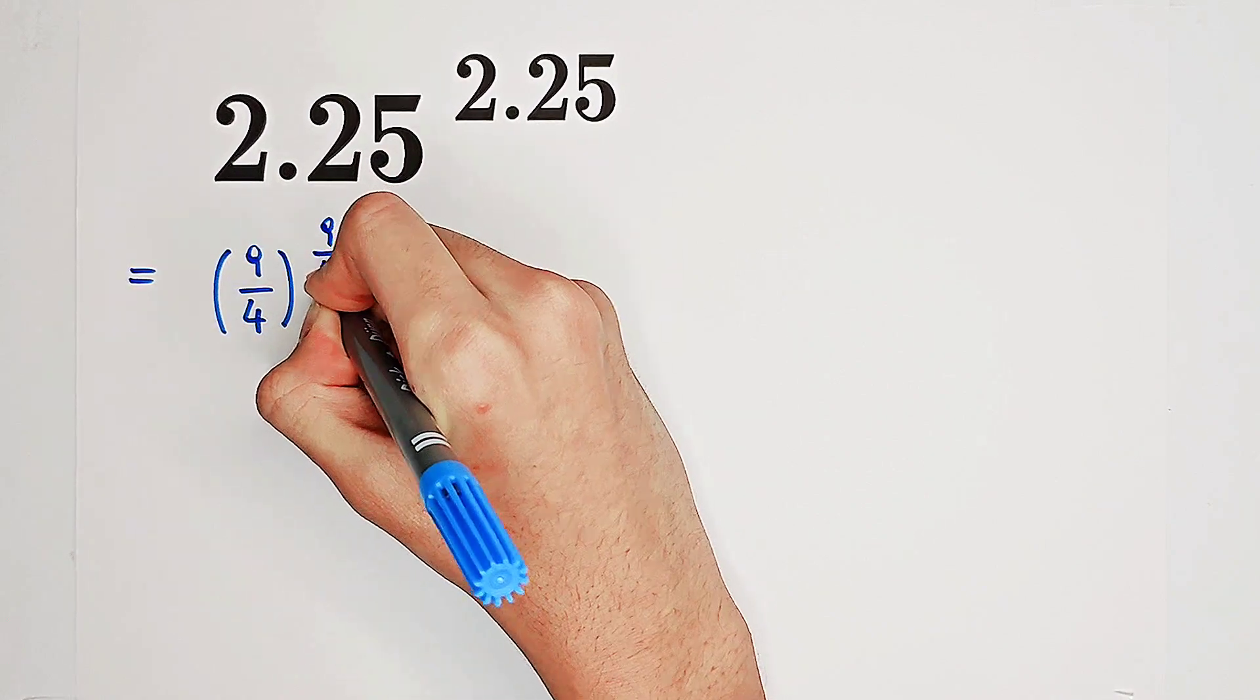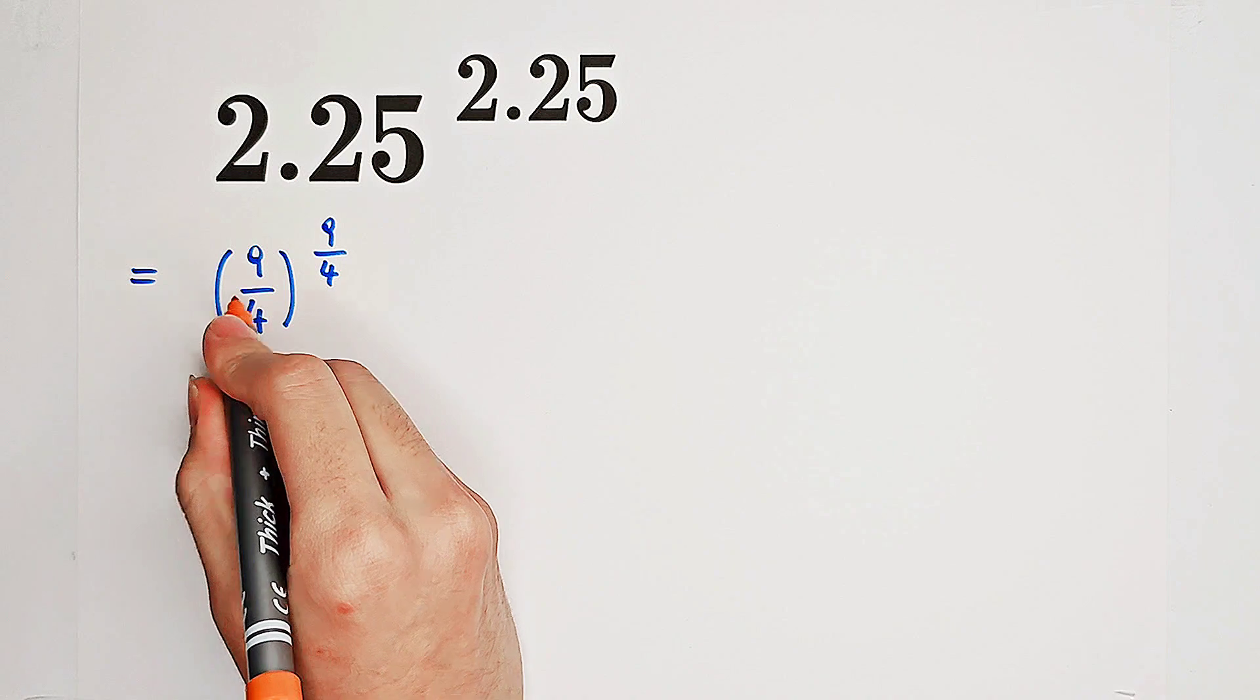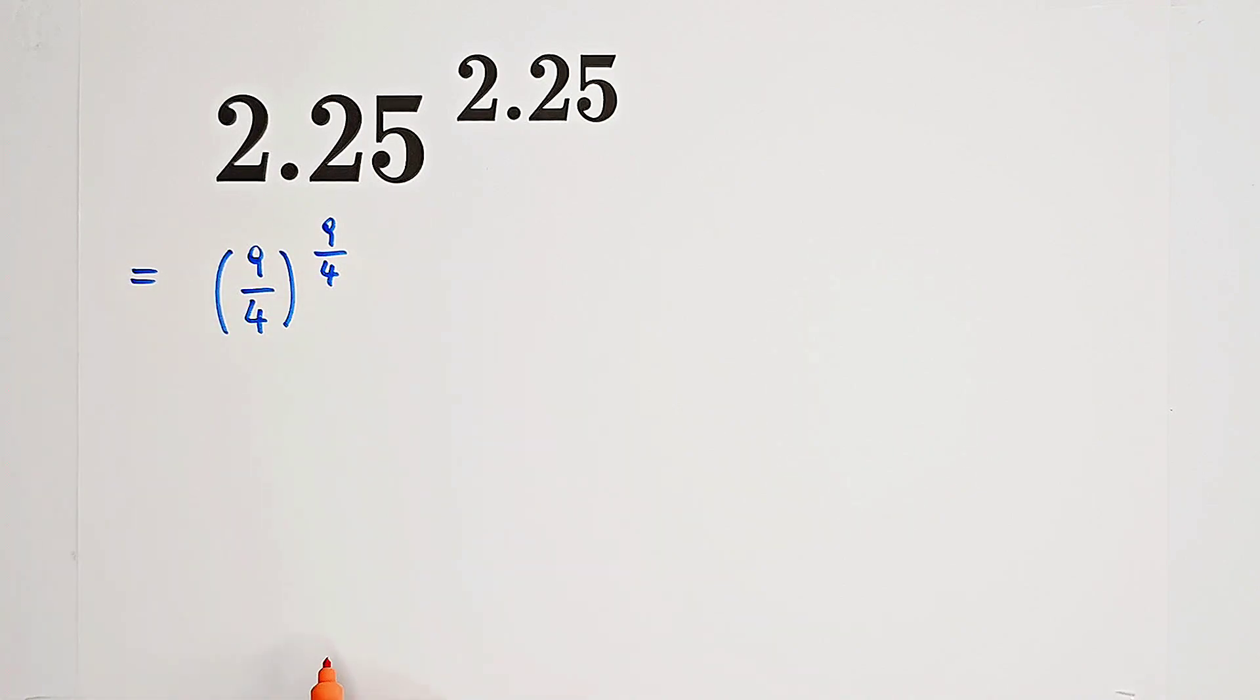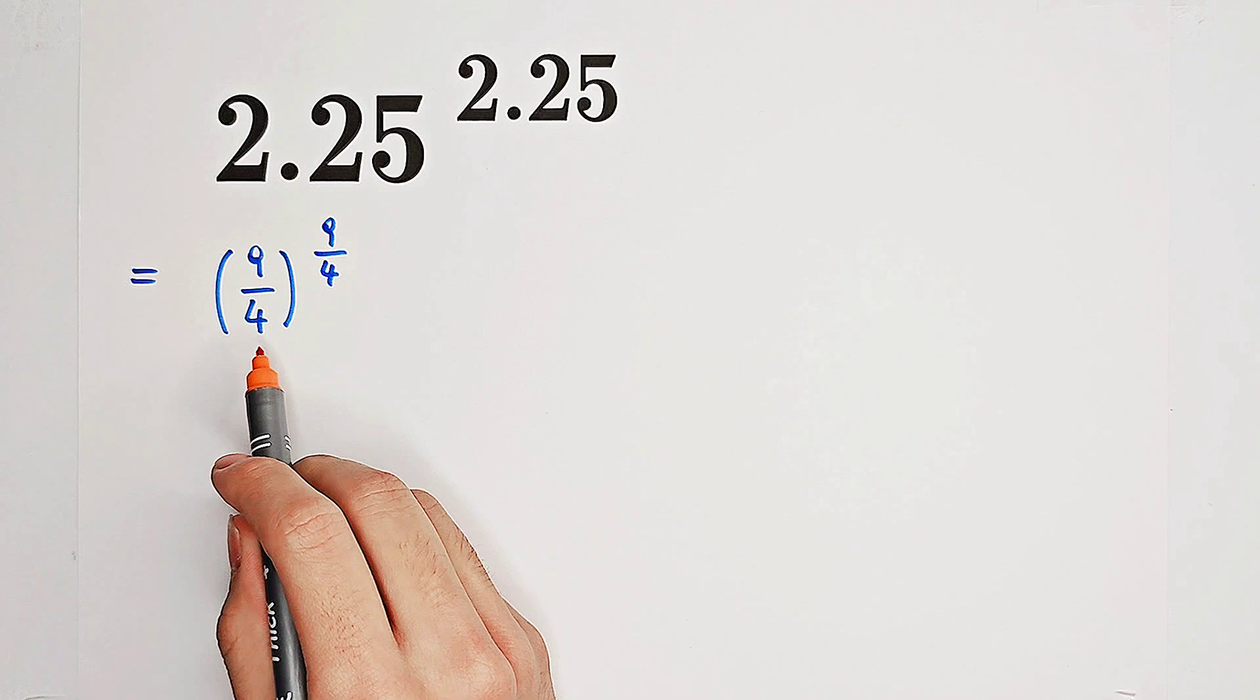To the power of 9 over 4. Very good. Then, what I'm going to do is to have a look at our base. 9 over 4. You can see that 9 is 3 squared and 4 is 2 squared.